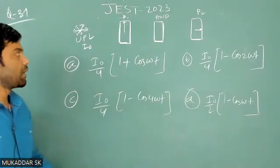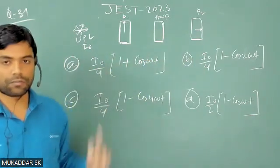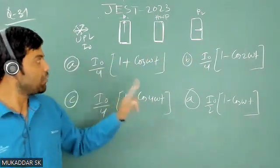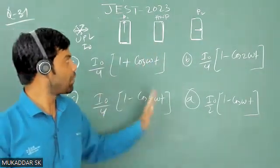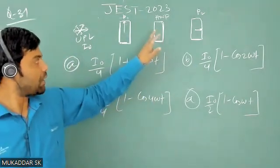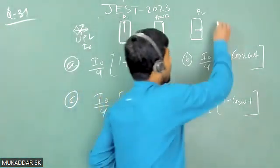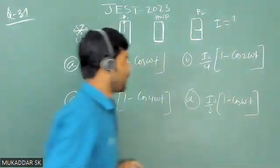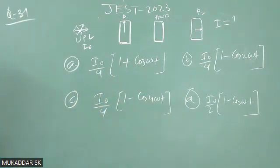In between these two polarizers, a half-wave plate is introduced. At time t equals zero, the fast axis of this half-wave plate is oriented along the vertical direction. With time, that fast axis is rotating with angular frequency omega. What is the intensity of light as a function of time? You have to calculate that. These are the four options that are mentioned.